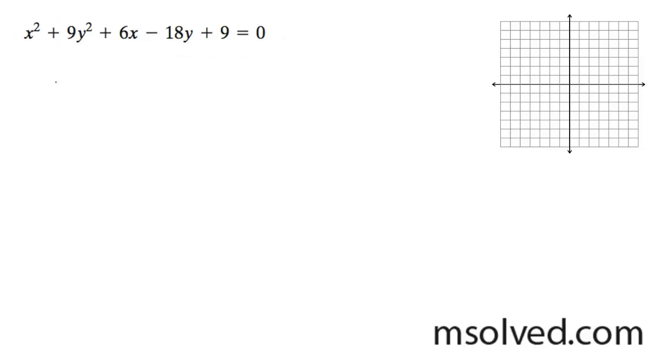So what we've got to do first is put this into standard form. We've just got to rearrange this. So x squared plus 6x plus 9y squared minus 18y is equal to, I'm going to move the 9 over here,